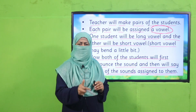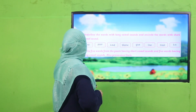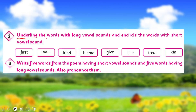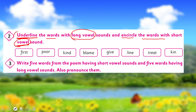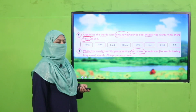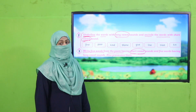Good job! Now it's time to practice from your book. You will underline the words with long vowel sounds and encircle the words with short vowel sounds. Pause the video and complete this exercise in your book. Also write five words from the poem which have short vowel sounds. Pause the video and complete this exercise in your notebook.